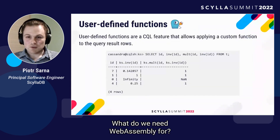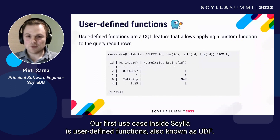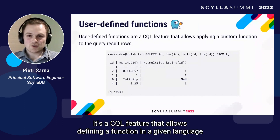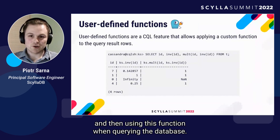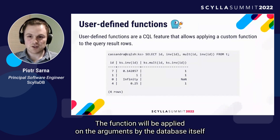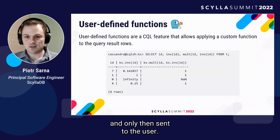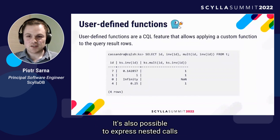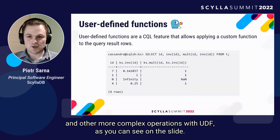What do we need WebAssembly for? Our first use case inside Scylla is user-defined functions, also known as UDFs. It's a CQL feature that allows defining a function in a given language and then using that function when querying the database. The function is applied on the arguments by the database itself before being sent to the user. It's also possible to express nested calls and other complex operations with UDFs, as you can see on the slide.